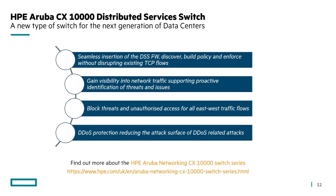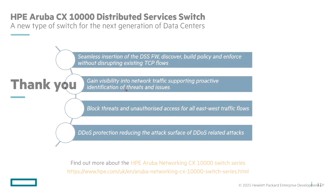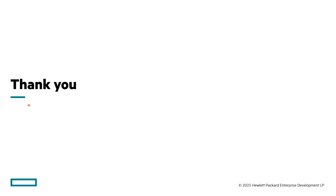The key reasons to leverage the CX 10,000 include: seamless insertion of the DSS firewall — discover, build a policy, and enforce without disrupting existing TCP flows; visibility into network traffic supporting proactive identification of threats; blocking of unknown and known threats and unauthorized access for all east-west traffic flows; and inbuilt DDoS protection reducing the attack surface of DDoS-related attacks, natively embedded on every CX 10,000 switch. Learn more about the HPE Aruba Networking CX 10,000 series by following the link. Thank you for tuning in.